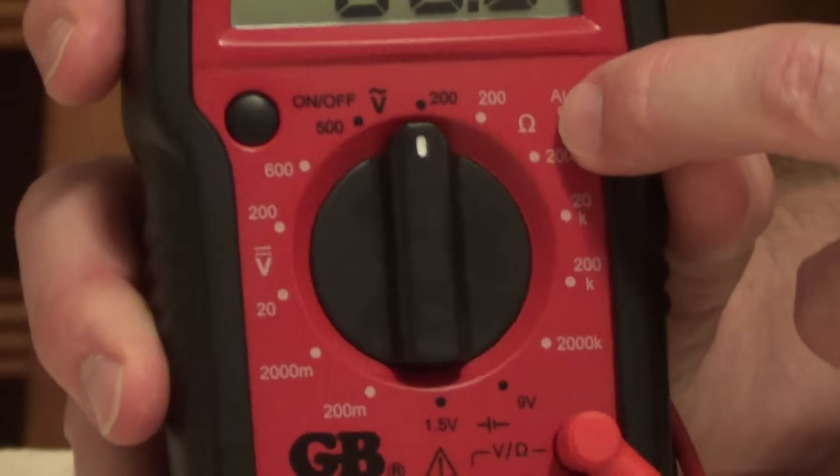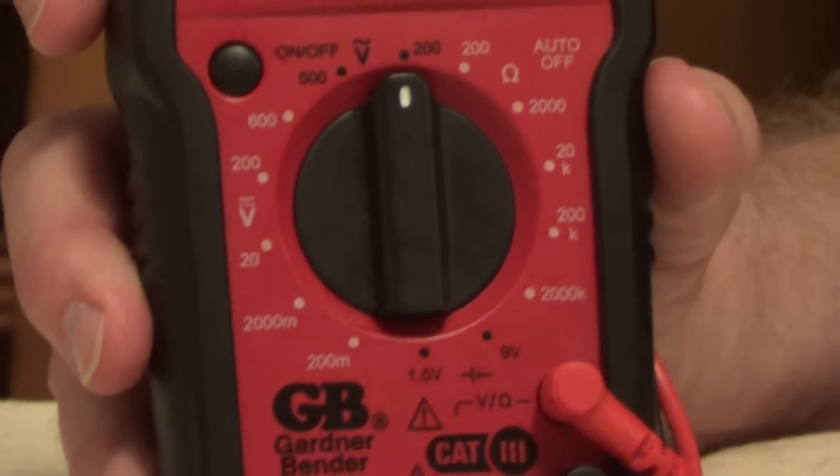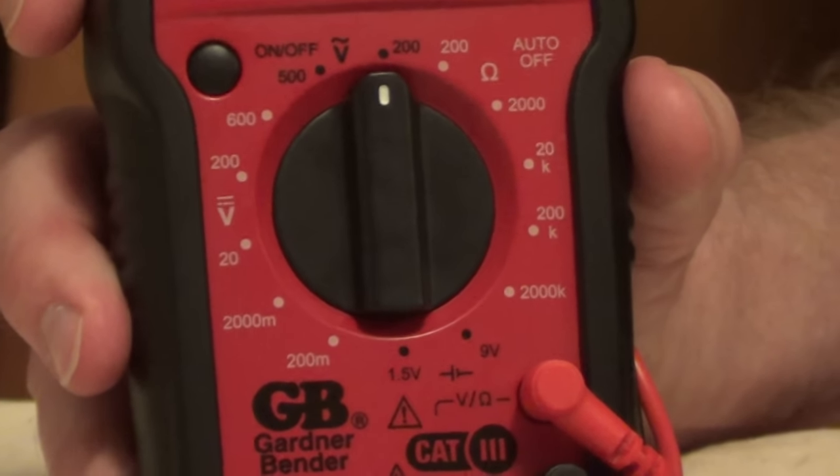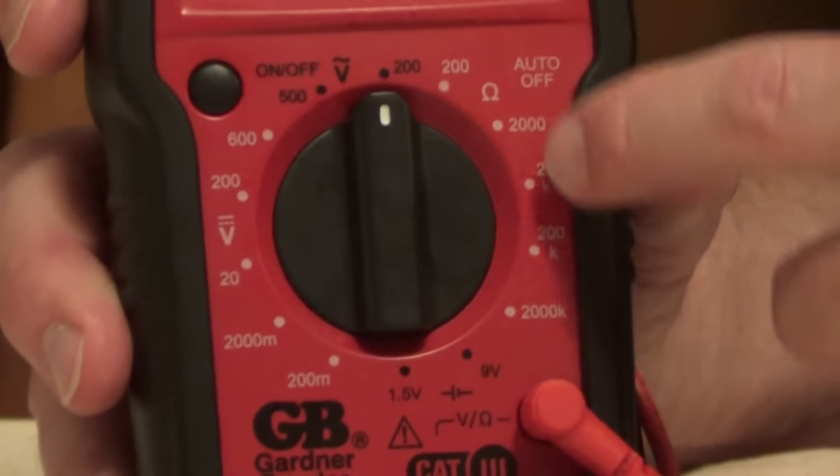The Omega symbol here is for resistance. So if you're checking to see if a fuse is good, or let's say a water heater element, you would use these settings.